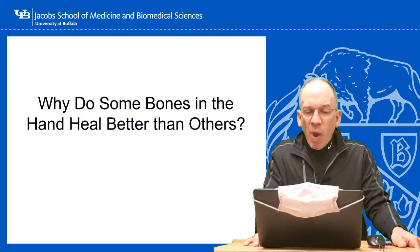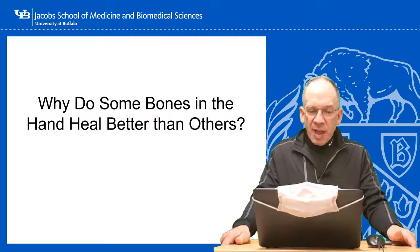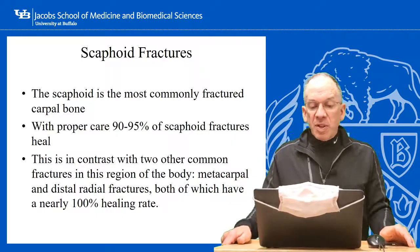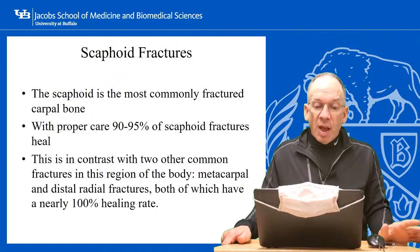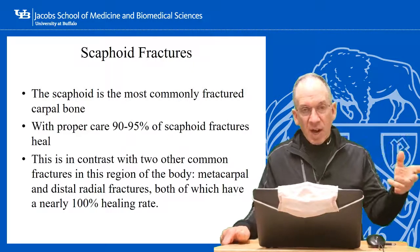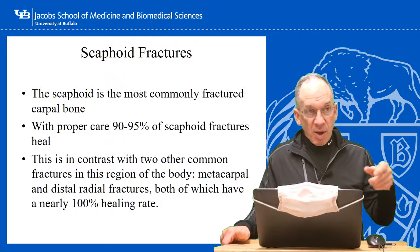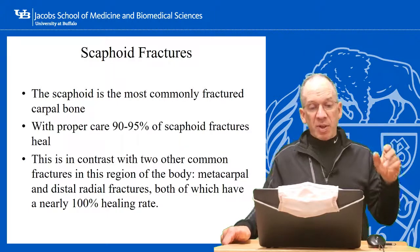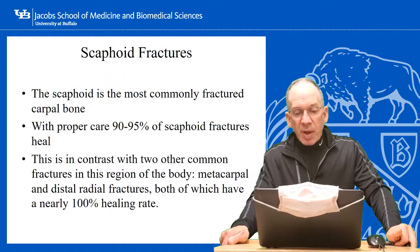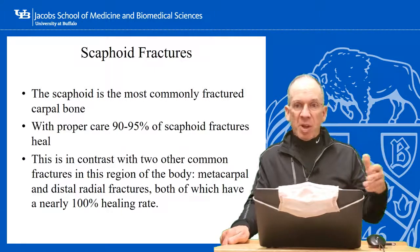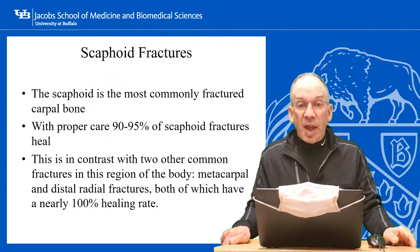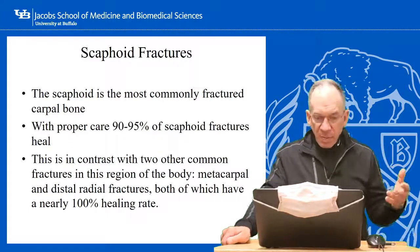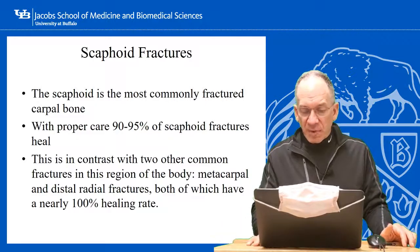Getting back to the scaphoid — why do some bones in the hand heal better than others? The scaphoid is the most commonly fractured carpal bone. With proper care, 90 to 95 percent of scaphoid fractures heal — but that sounds terrible, because metacarpal or radius fractures have nearly 100 percent healing rates. The scaphoid does a lot worse. One reason is mechanical instability: once the scaphoid breaks, the distal fragment stays with the distal row and the proximal fragment stays with the proximal row, so every time you move your wrist, the two fragments are moving differently.